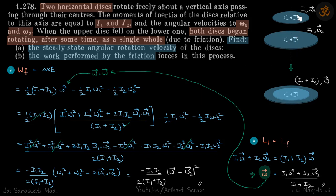We are given two disks: one rotating with angular velocity vector ω₁ and one rotating with ω₂ vector. Their moments of inertia are given. When they are placed on top of each other, the resultant combined disk rotates with a common angular velocity ω, and we need to find this ω.